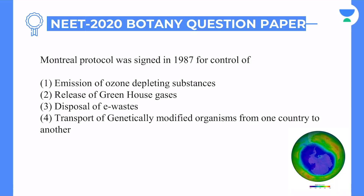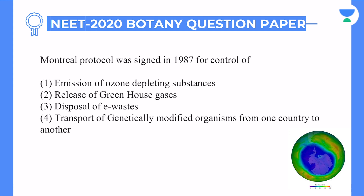The next question — very important — from the ecology unit. Four chapters are very important, and you also have to read environmental chemistry. Dates, protocols and programs — write them on a single sheet of paper so that you can revise on the last day. The question is very straightforward: Montreal Protocol was signed in 1987 for control of ozone-depleting substances. The answer is option number 1: emission of ozone-depleting substances.